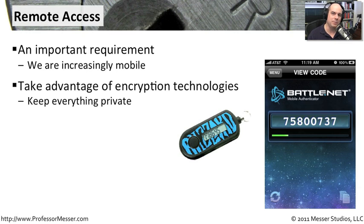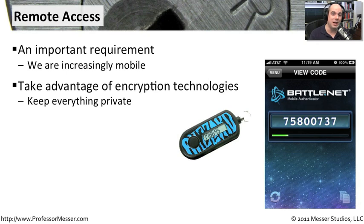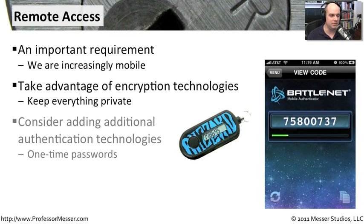Whenever you start looking at how you're going to get people to communicate back securely into your network, you're almost always going to use some type of encryption technology. Encryption is incredibly important because you have no idea who on the internet might have access to this data as it's flowing through. If you're in a hotel, the hotel certainly has access to that — other people staying there might have access to your data as well. It's very common on wireless networks for people to sniff the air and find information you may be sending in the clear. Creating an encrypted tunnel prevents some of those things from happening.